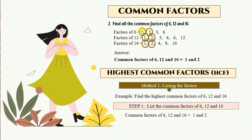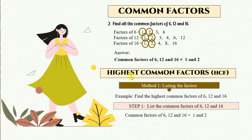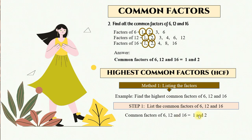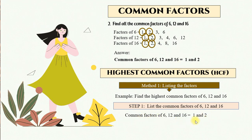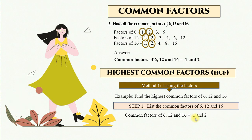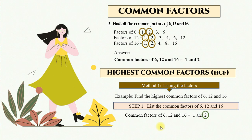You list all the factors, then find the same numbers — the common factors — using the listing method. Now we want to find the highest. From this list of common factors, we find the greatest one. The common factors are 1 and 2, so the highest one is 2. Therefore, HCF equals 2.